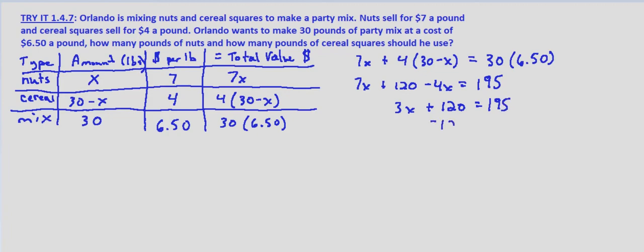7x minus 4x is 3x plus $120 equals $195. Subtract $120 from both sides. We get 3x equals 75. So x equals 25.